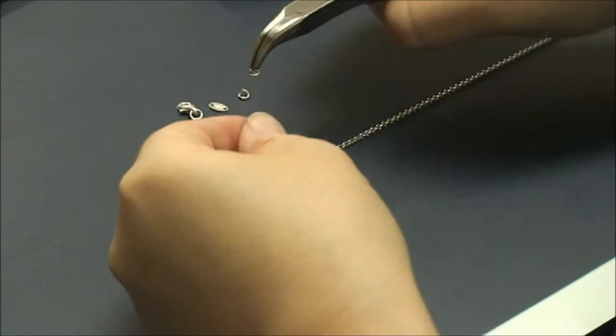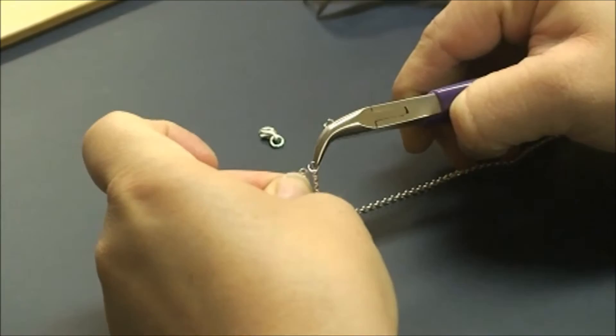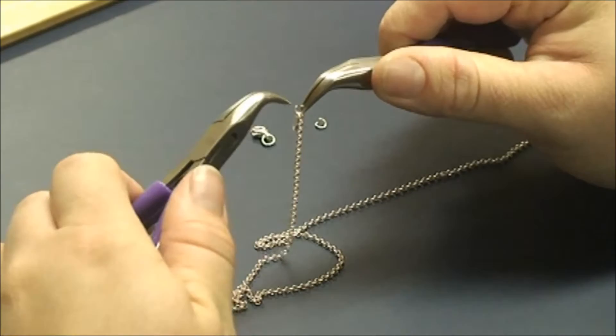So first you take your chain, find your end link and get your 3.5mm jump ring, put it through the end link that you have, and then take your quality tag connector, put the one end through the jump ring, and close it up.